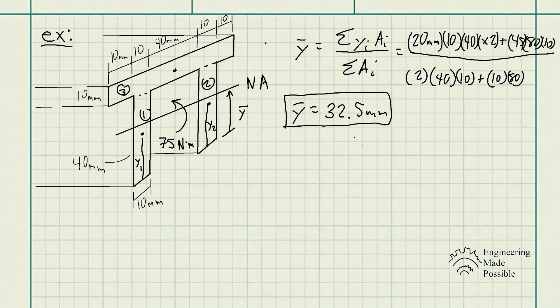Now that we have Y bar, we can solve for the moment of inertia. In this case, we're going to be applying the parallel axis theorem, because we're solving for the moment of inertia of each of these smaller areas with respect to the neutral axis, which is why we're applying the parallel axis theorem.